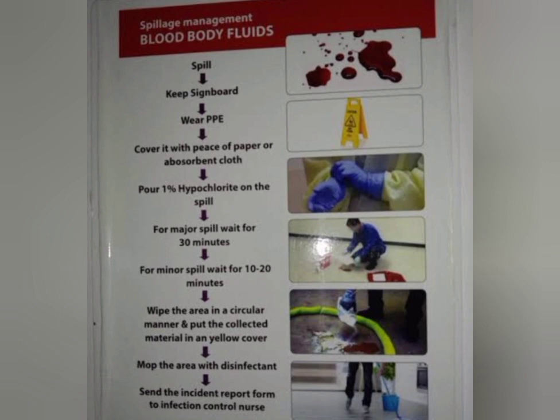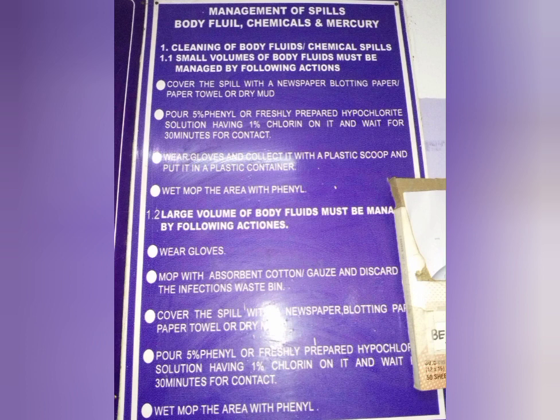The next IEC material your HWC should have is Blood and Body Fluid Spills Management. If blood or body fluid spills on the ground, first keep a 'Caution' signboard. Wear personal protective equipment, cover the spill with paper or absorbent cloth, then pour 1% hypochlorite solution on it. For major spill, wait 30 minutes; for minor spill, wait 10 to 20 minutes. Wipe in a circular manner, put collected material in a yellow cover, mop the area with disinfectant, and send the incident report form to the infection protocol committee.